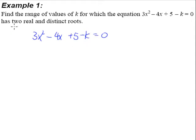Now, since we know that there are two real and distinct roots, what does it tell us? It tells us that our b squared minus 4ac will be greater than 0.